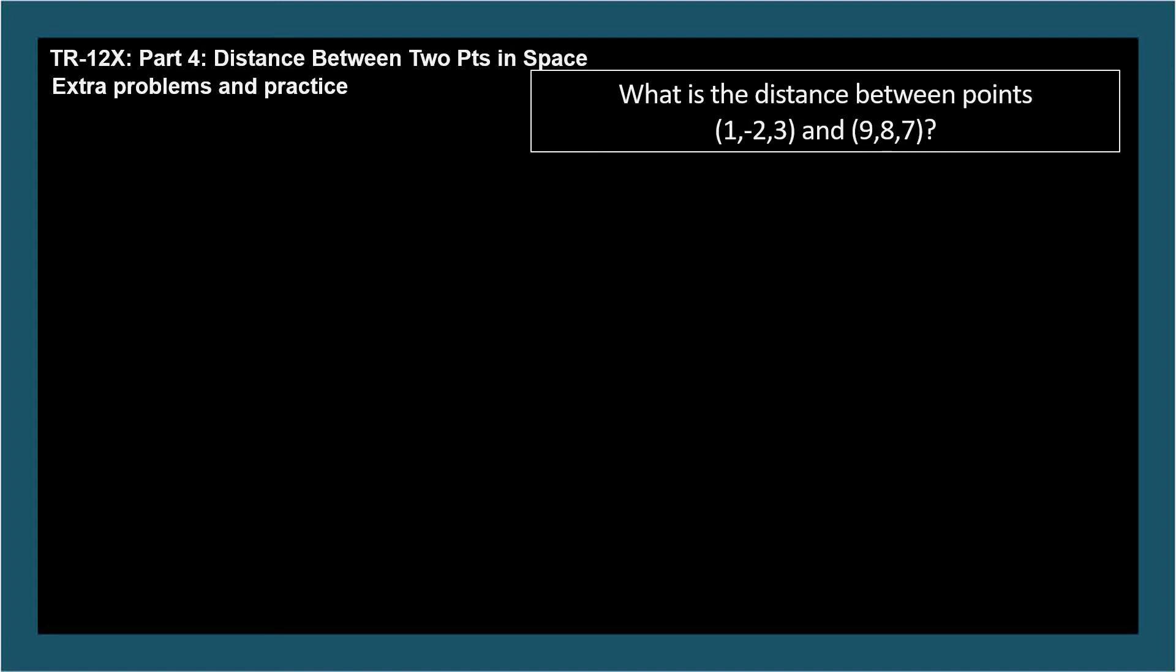What's the distance between the points (1, -2, 3) and (9, 8, 7)?